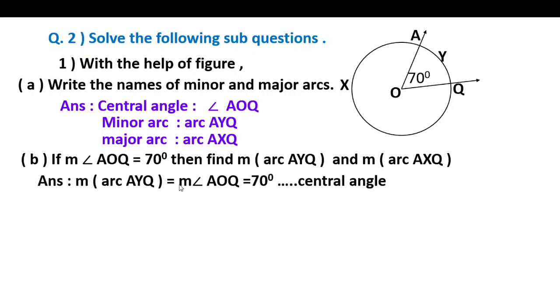Answer: Measure of arc AYQ equals measure of angle AOQ. The arc measure equals the central angle measure because the central angle corresponds to the arc. So arc AYQ equals 70 degrees.